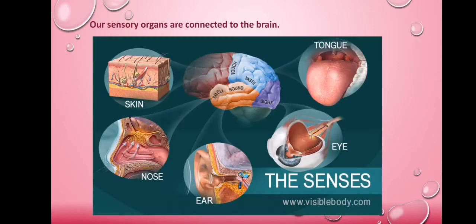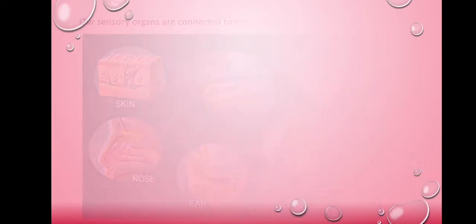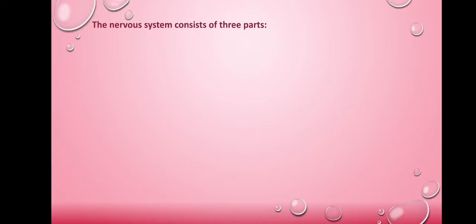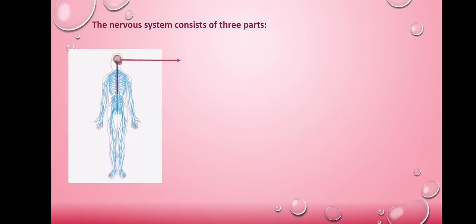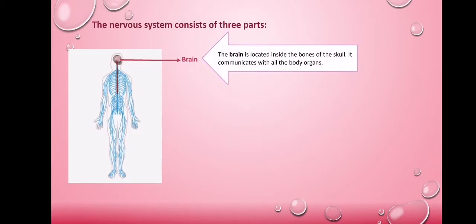Our sensory organs are connected to the brain by nerves. The nervous system consists of three parts. The brain — the brain is located inside the bones of the skull. It is protected by these bones, and it communicates with all the body organs.